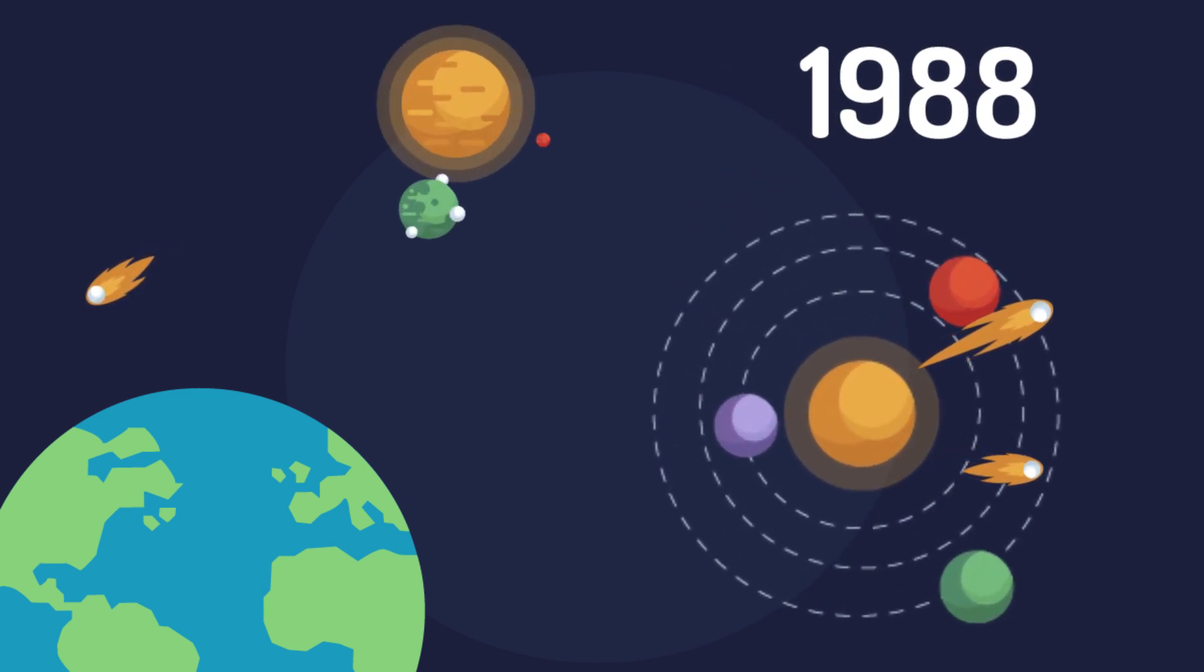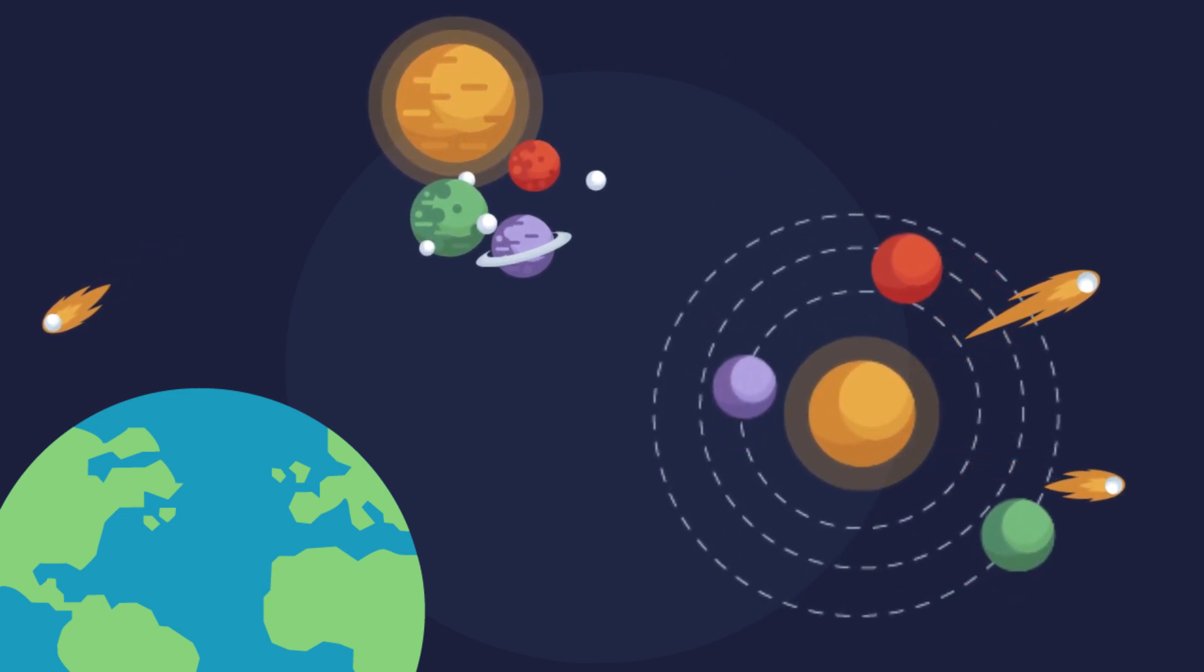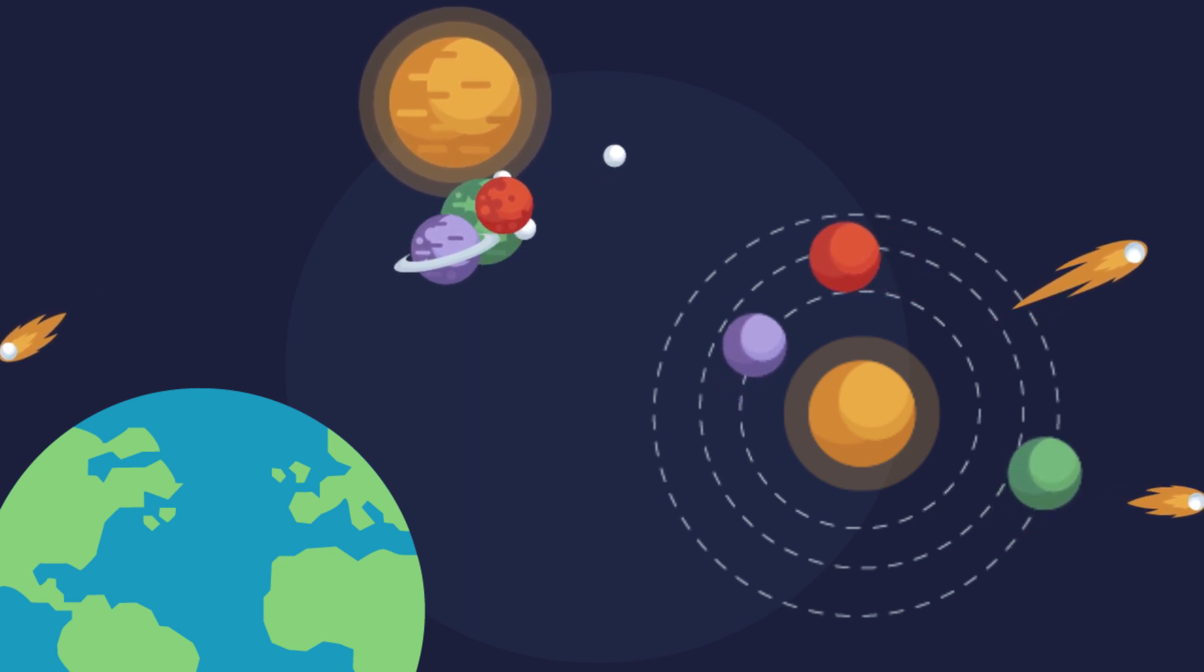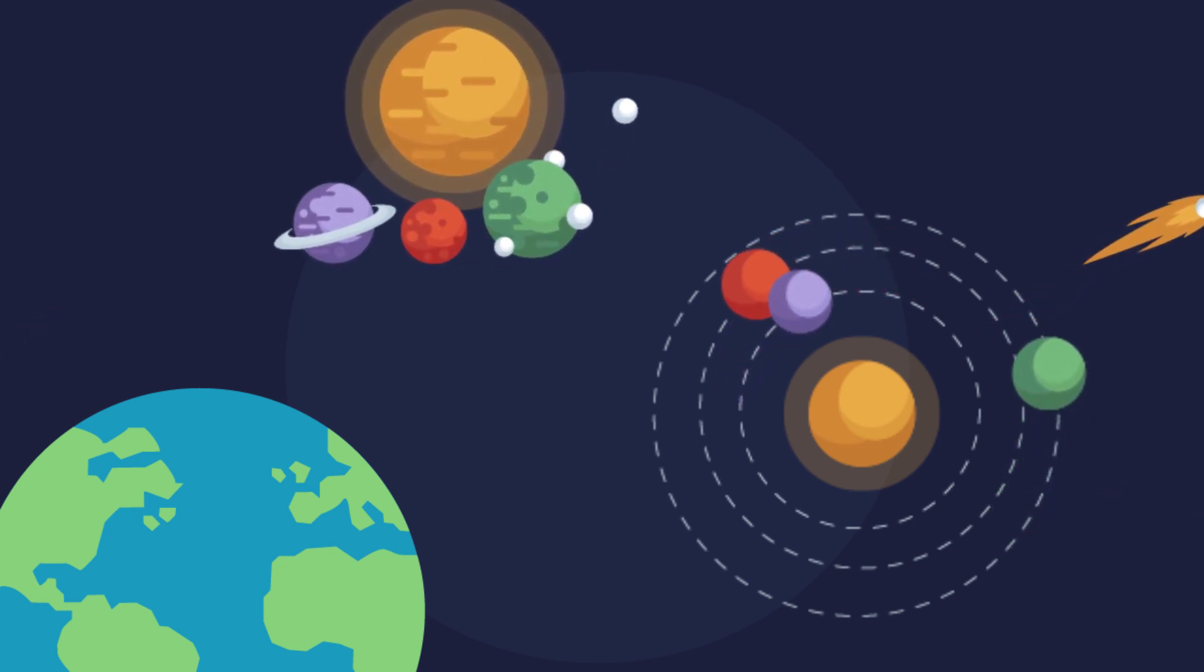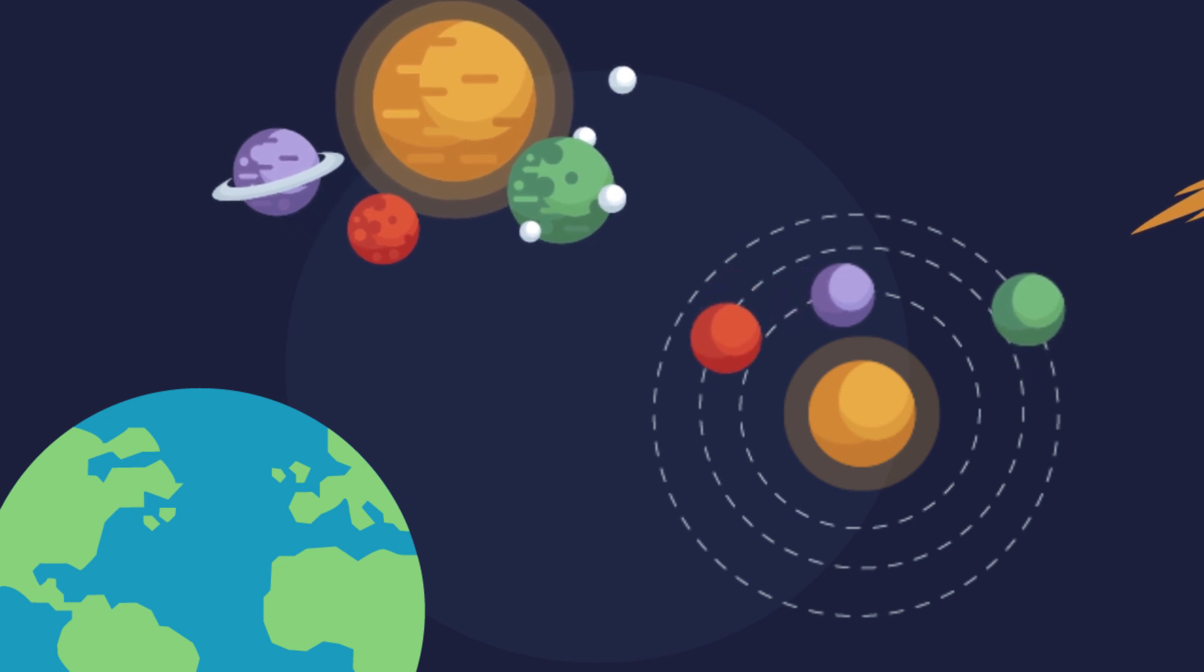And before 1988, no one had ever discovered or confirmed that there are planets outside the solar system. Imagine that. 30 years ago, people didn't know that other stars like our sun have any planets like we are the only one in the whole universe.